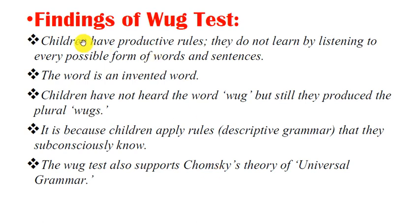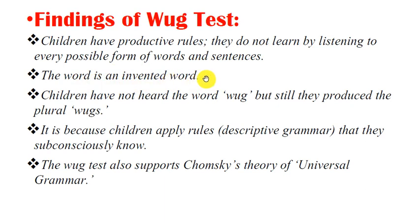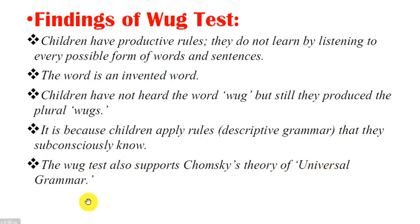What are the findings of the Wug test? The findings mean that children have productive rules — they do not learn by listening to every possible form of words and sentences. 'Wug' is an invented word; children had never heard it before, yet they produced the plural 'wugs.' This is because children apply rules — they apply descriptive grammar that they subconsciously know. The Wug test also supports Chomsky's theory of Universal Grammar.